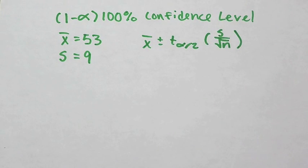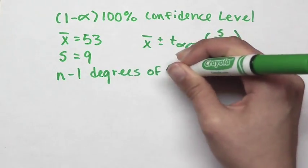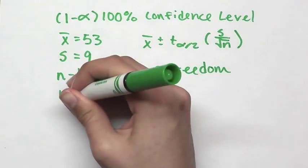In the confidence interval x bar plus or minus t of alpha over 2 times s over the square root of n, with n minus 1 degrees of freedom.